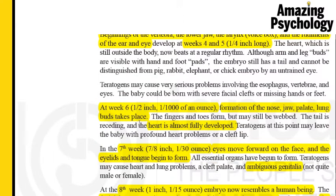At week six the embryo has grown to about half an inch and about one-thousandth of an ounce. The heart is almost fully developed, and the nose, jaw, palate, and lung buds start forming. In the seventh week the baby grows to about seven-eighths of an inch and one-thirtieth of an ounce. The eyes move toward the front of the face, and the eyelids and tongue slowly start to form, but it's still not clear whether it's a boy or girl because the genitalia have not formed yet.